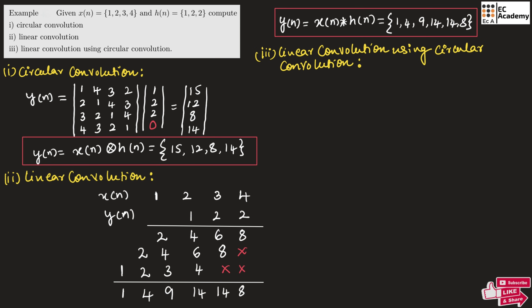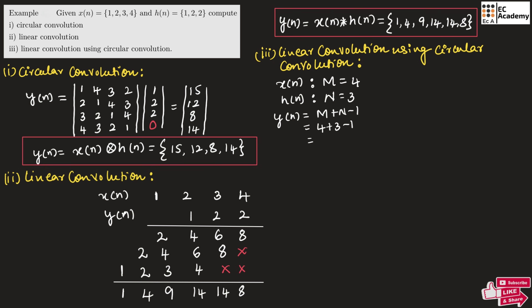Now let us understand linear convolution using circular convolution. The first step is to identify the length of each sequence. The length of x of n is M, which equals 4. The length of h of n is N, which equals 3. The length of the output sequence y of n will be M plus N minus 1, which is 4 plus 3 minus 1 equals 6. So we need to make the length of both x of n and h of n equal to 6 by appending zeros.